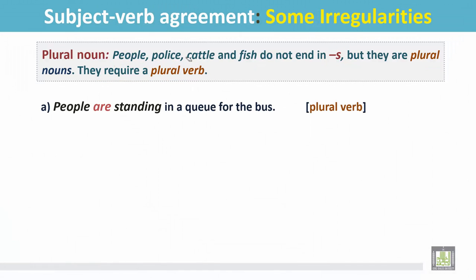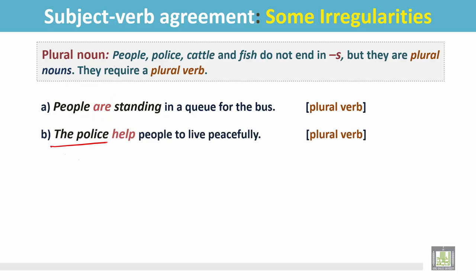Examples: 'People are standing in a queue for the bus.' People is a plural noun so the verb is plural: are standing. 'The police help people to live peacefully.' This is a plural subject and the verb is plural: help, the basic form of the verb with no S or ES added.